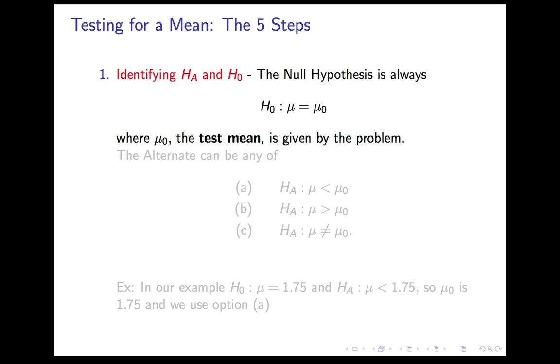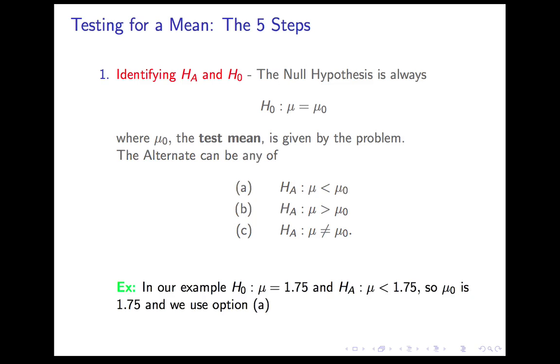The null hypothesis is always μ equals some quantity called the test mean, which we write μ₀. But in each problem, that is a number, just like hypothesis testing about a proportion, p₀ is a number. Just like hypothesis testing about a proportion, there are three alternate hypotheses, which can either be μ is less than that number, greater than that number, or two-tailed, μ is different from that number. So in our case, μ equals 1.75 is the null hypothesis. Μ, the average weight of all bags, is less than 1.75 is the alternate hypothesis. So we're using option A, and our μ₀ is 1.75.